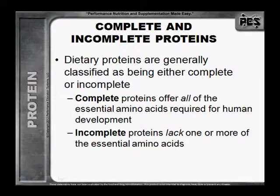Dietary proteins are generally classified as being either complete or incomplete. Complete proteins offer all of the essential amino acids required for human development. Incomplete proteins lack one or more of the essential amino acids.